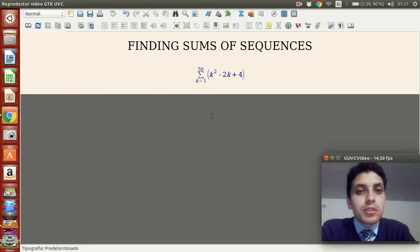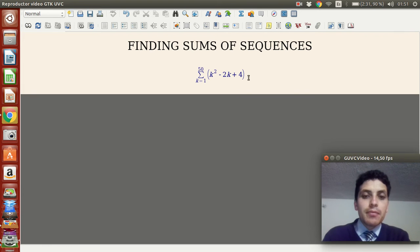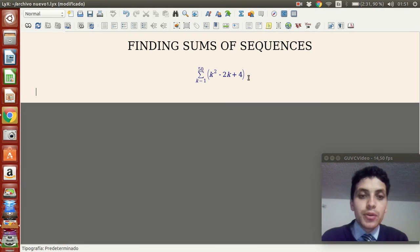I'm going to show you two examples. This is the first example: the sum of k squared minus 2k plus 4, from k equals 1 to 50. The first property I want you to notice is that as we have sums, we can distribute the sums per each term of the sequence.